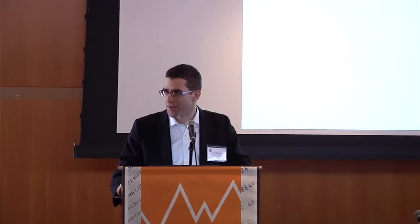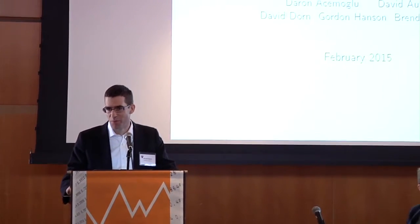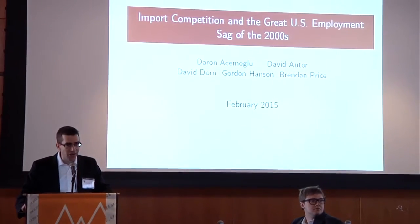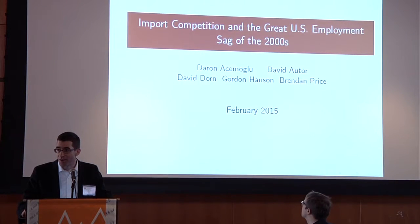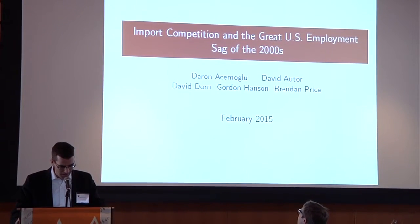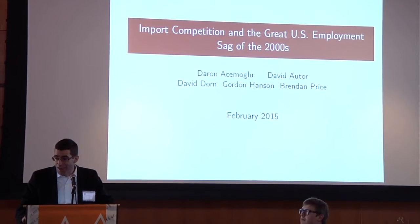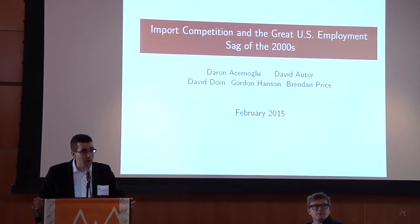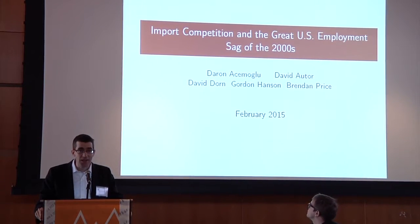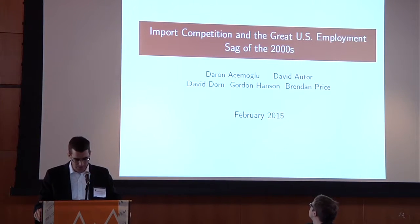We started this morning by seeing evidence on rising incomes at the very top of the distribution, where capital income is an important part of the income portfolio. Once we move further down in the distribution, labour income is by far the dominating source. In order to get labour income, people first need to have a job. So what we're doing in this paper is to look at employment in the US labour market.